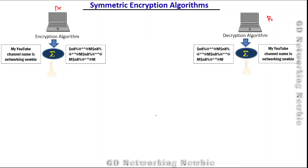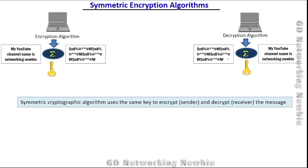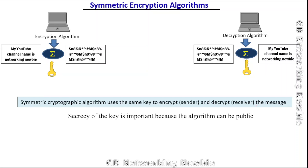Now even if there is any third user who receives this message and uses the commonly known decryption algorithm — because decryption algorithms are actually made public and everyone knows about them — they will still not be able to decrypt the message, because for decryption they also need to have the key, and no one else has that key. So the symmetric cryptographic algorithm uses the same key to encrypt as well as decrypt the message, and the secrecy of the key is important. The algorithm can be public, but the secrecy of the key is the heart of the symmetric encryption algorithm.